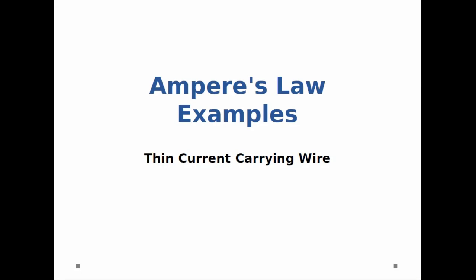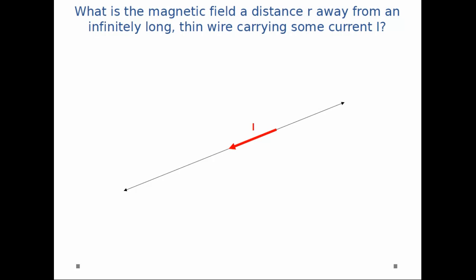So in this video, we're going to look at Ampere's law, specifically the thin current carrying wire. So I ask you, what is the magnetic field some distance r away from an infinitely long thin current carrying wire? It has some current i, which I've drawn in red.